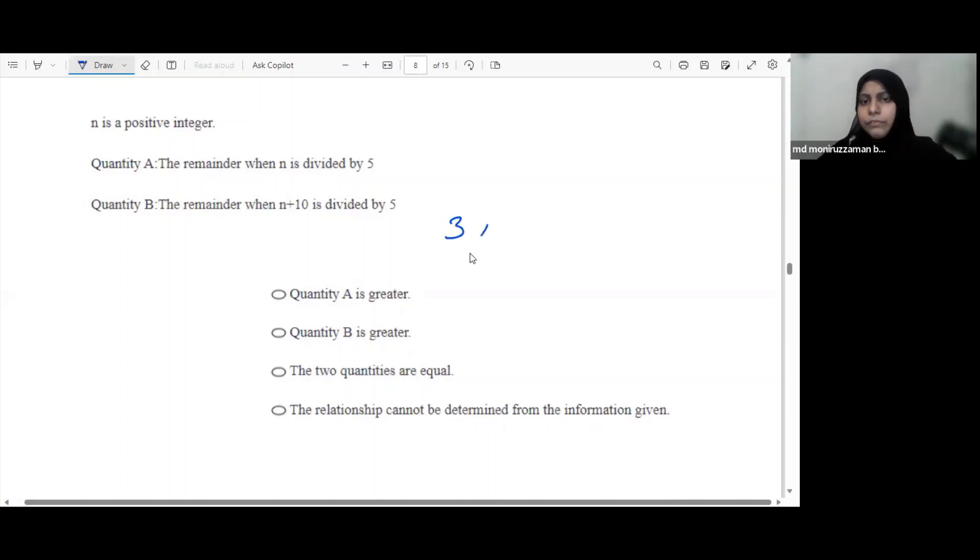When we have the remainder when divided by 5, we get 3, or 4. When n is divided by 3, the remainder is the same.